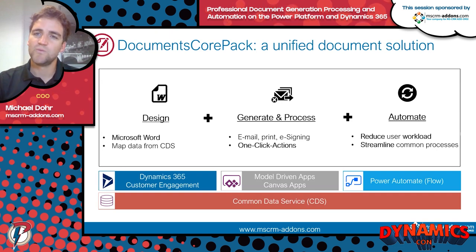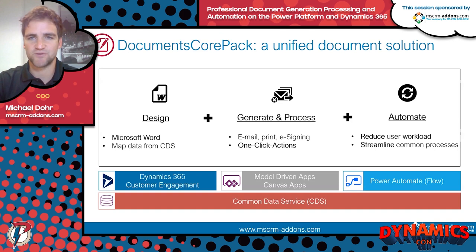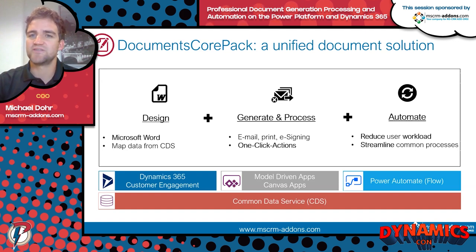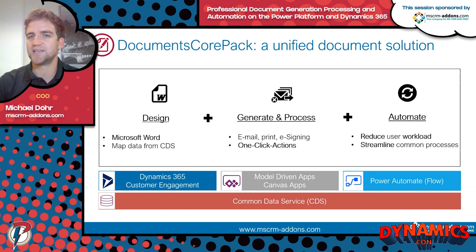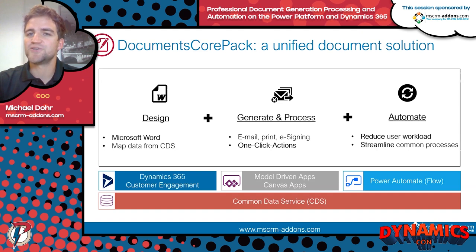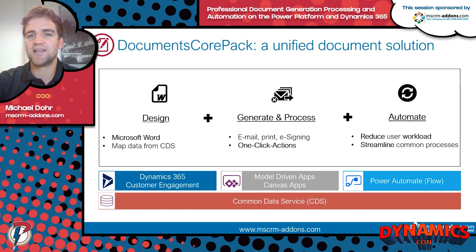Documents Core Pack consists of three main elements. First is design — we implemented our template designer inside Microsoft Word so you can use all its rich capabilities to create nice-looking documents. We equip Word with a tool that maps data out of the Common Data Service into your documents. After designing templates, we have tools to generate and process documents efficiently — sending by email, printing, or starting an e-signing process. Last and most powerful is automation, which allows you to standardize and streamline common processes via Power Automate in the background, severely reducing user workload.